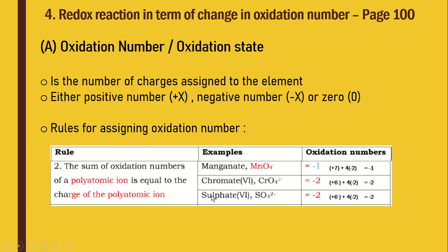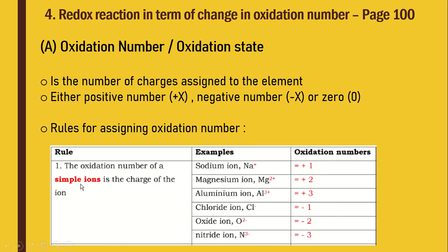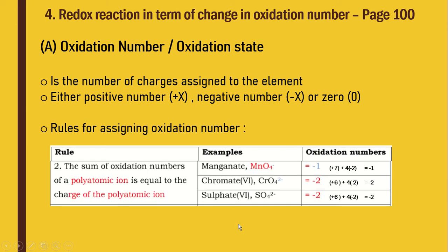Rule 2: The sum of oxidation numbers of a polyatomic ion is equal to the charge of the polyatomic ion. Previously we had simple ions — sodium, magnesium, aluminium, chloride. For polyatomic ions, there is a combination of ions. For example, manganate ion MnO₄⁻ contains manganese and oxide ions. Its overall charge is −1, so the sum of oxidation numbers equals −1.